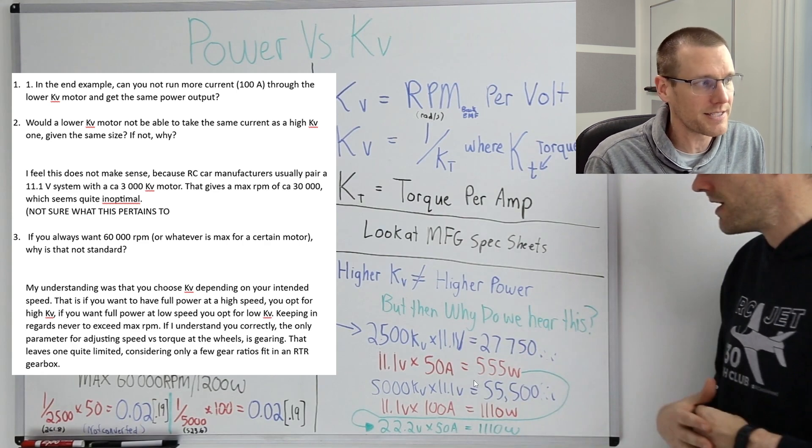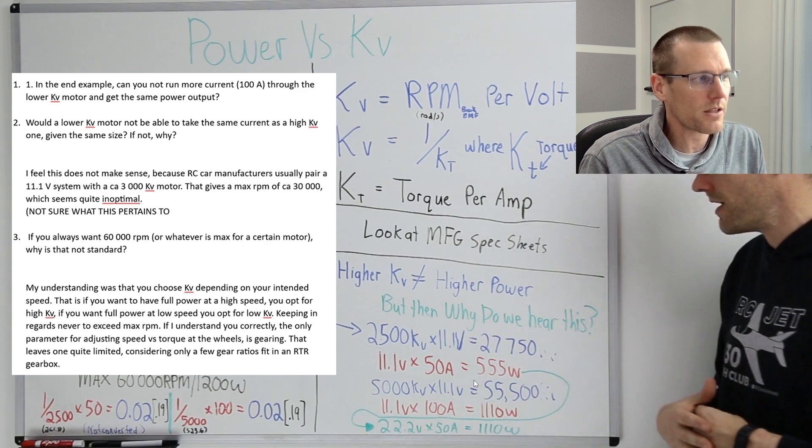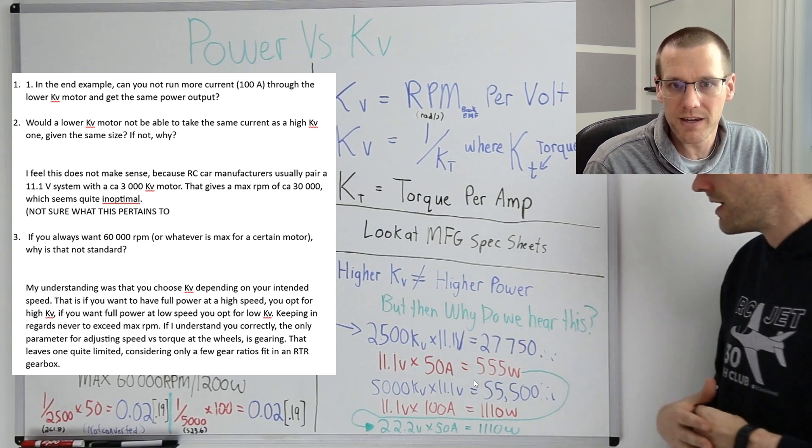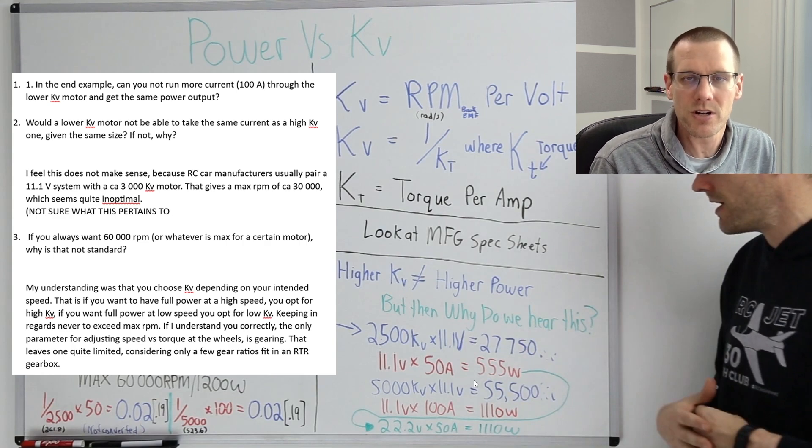So now let's take a look at that second question. Would a lower KV motor not be able to take the same current as a higher KV one given the same size? And if not, why?